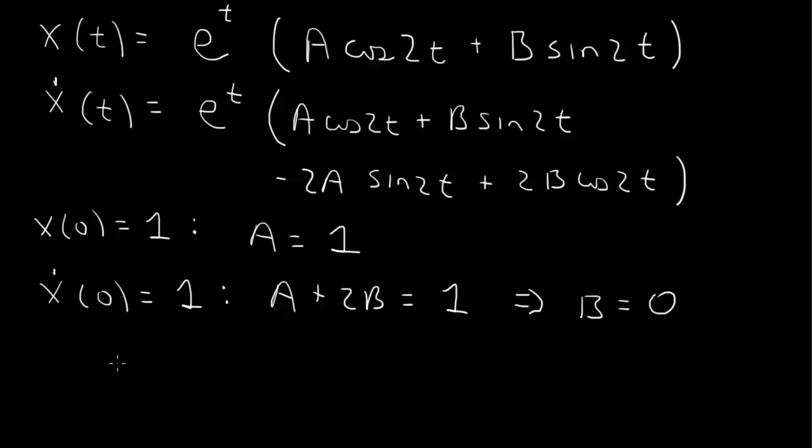So then we get our solution. x of t then is equal to e to the t times cosine 2t. And that will satisfy x of 0 equals 1, and x dot of 0 will be the derivative of the first times the second. The second will also give us 1.